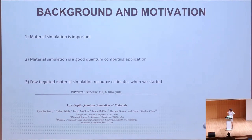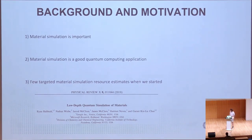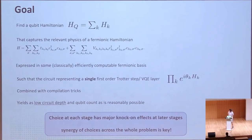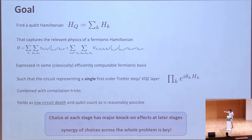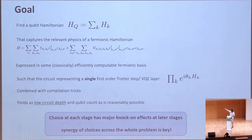At the time we started working on this, there were not very many resource estimates targeted towards material simulation. We really wanted to get into the nitty-gritty of what exactly the cost estimates would look like for very specific, potentially useful materials. The goal of the project was to find some kind of qubit Hamiltonian that would capture the relevant physics of a fermionic Hamiltonian consisting of quadratic terms and quartic terms, expressed in some classically efficiently computable fermionic basis, such that the circuit for a single first-order Trotter step or VQE layer would be minimized.